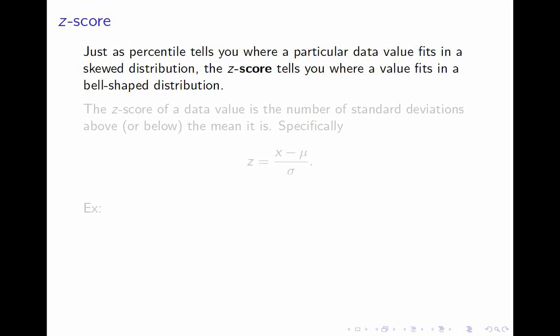The z-score is something you can compute for an individual data point. That is, for an individual in your population or sample. How do you compute it? With this formula, what it tells you is the number of standard deviations above or below the mean your data value is. The formula is z equals x minus mu over sigma.